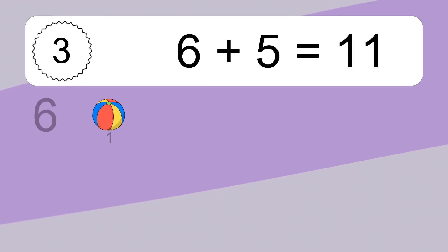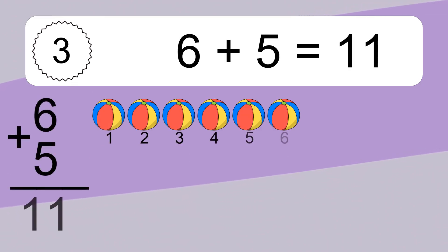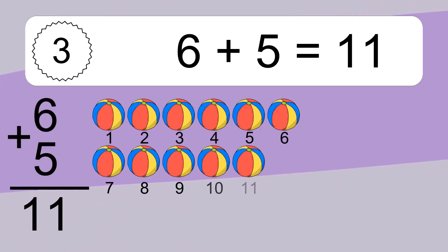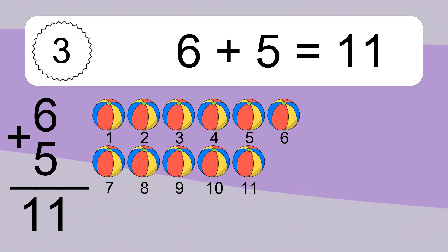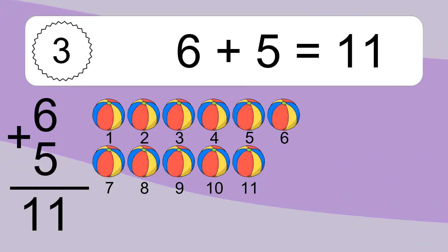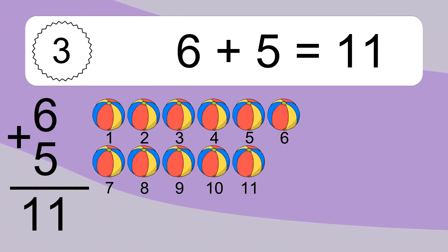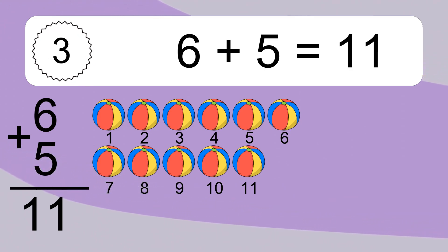6 plus 5 equals 11. Let's count it. 1, 2, 3, 4, 5, 6, 7, 8, 9, 10, 11.